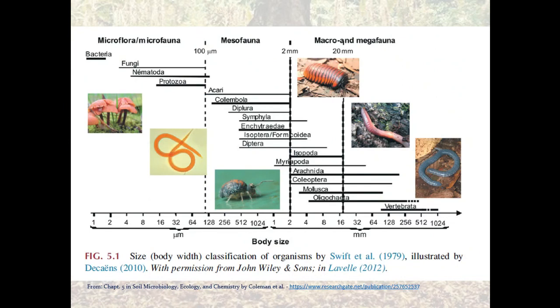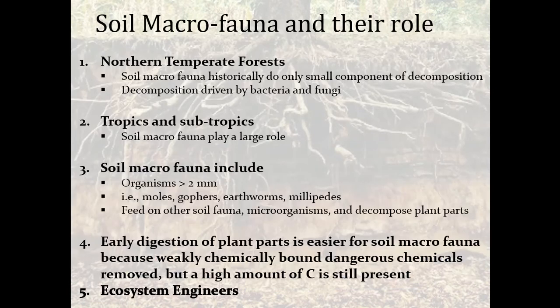There is a size chart illustrating the range of different micro, meso, and macro flora and fauna. For macrofauna in northern soils, historically they only drive a small component of decomposition, which is really driven by bacteria and fungi — largely due to the low temperatures through most of the year. In tropics and subtropics, though, macrofauna play a much larger role, being active year-round regardless of soil temperature.